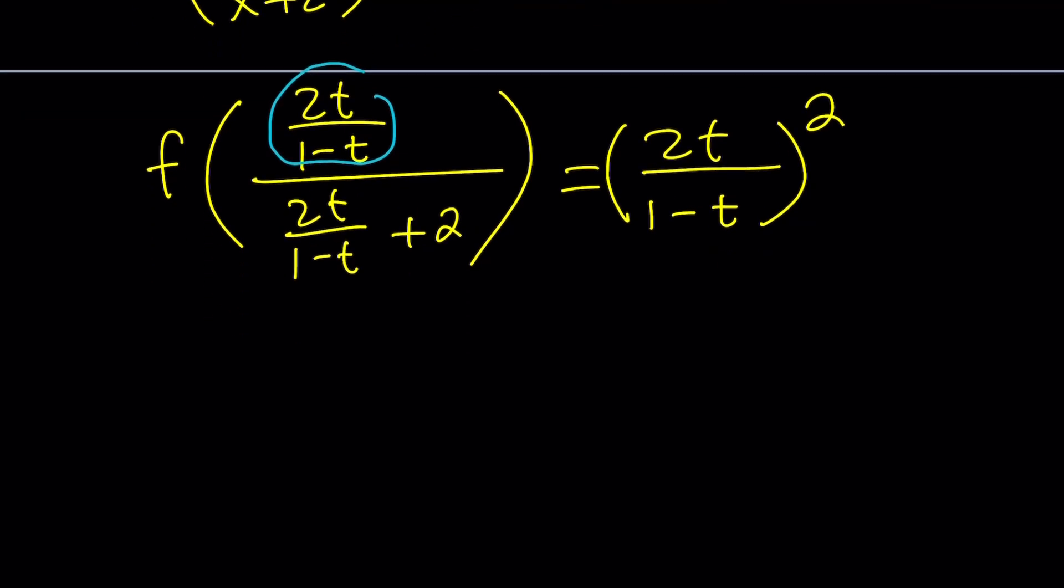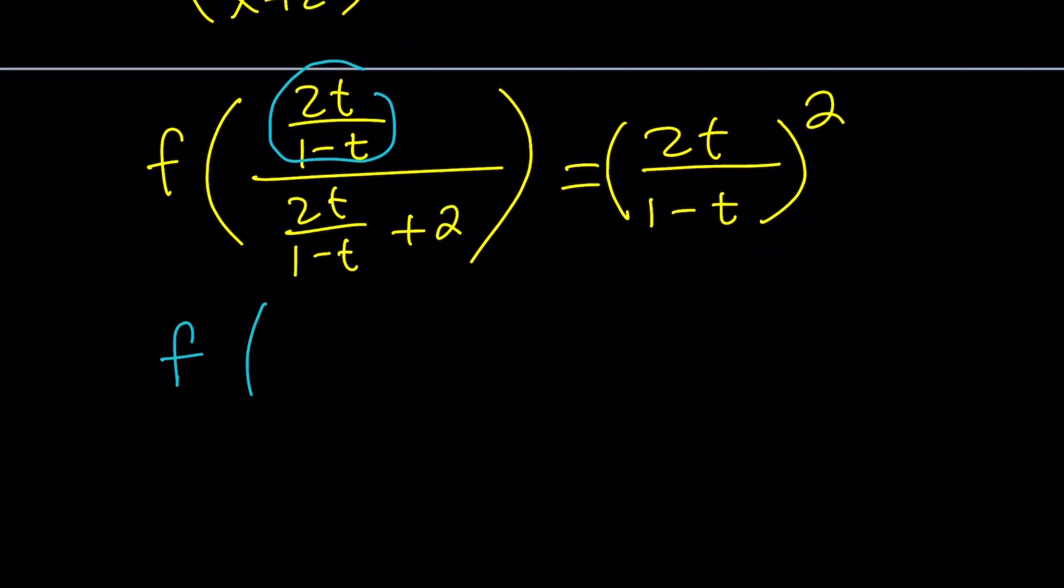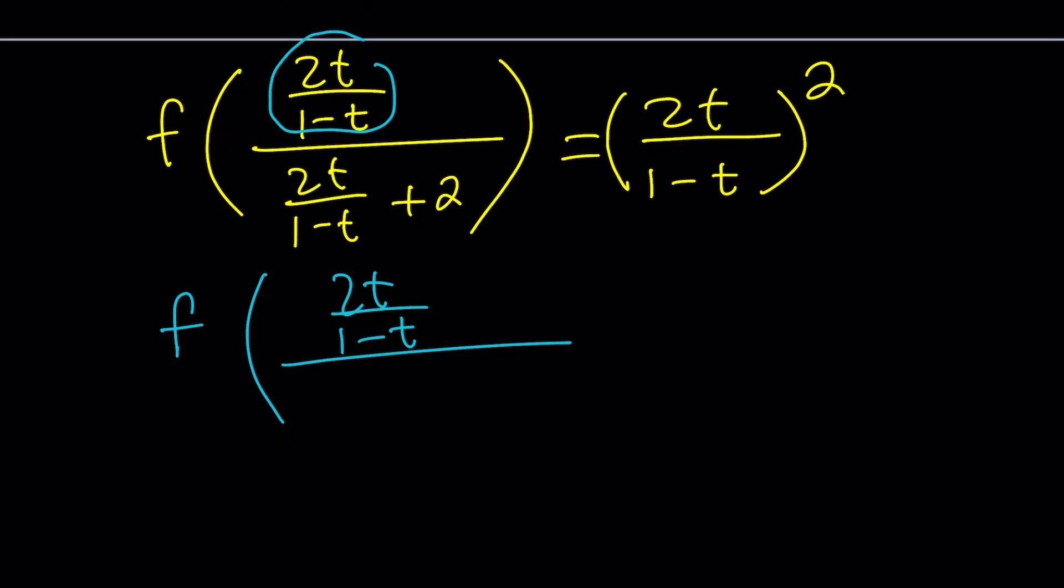Good, good. Now let's go ahead and make a common denominator at the bottom of this denominator or the denominator of the denominator or the denominator of this fraction, something like that. 2t plus 2 minus 2t. I'm making a common denominator here over 1 minus t. And notice that when you flip and multiply, these two are going to cancel out and the 2t cancels out. We have 2t over 2, which is t.